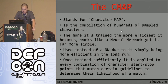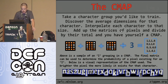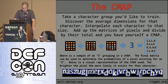Once sufficiently trained, the cmap is applied to every combination of character start and stop points that match guidelines determining their likelihood of a match. To build a cmap, take a character group to train, discover the average dimensions, interpolate each character to that size, add up the pixel matrices, and divide by the total. For example, using three 'i' characters: if a pixel appears in all three, the cmap value is 1.0; if it appears in two out of three, it's 0.6. Do that with hundreds of characters to get a basic average for each character.